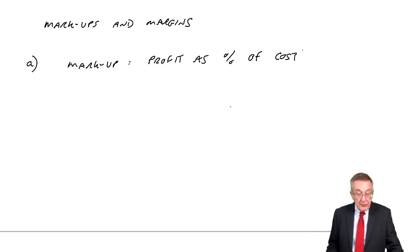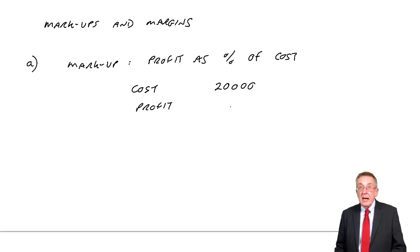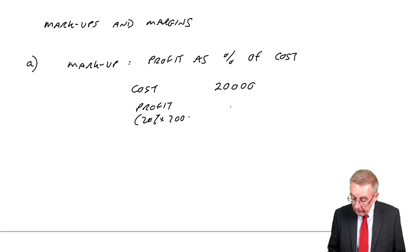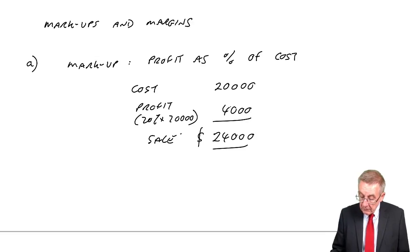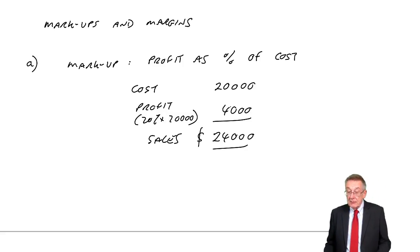And so since the cost of goods sold was 20,000, she'll add on a profit, the markup 20% of cost, 4,000. And therefore, the sales will be 24,000. It's nice and easy. If we know what the cost is of what we're selling, if we know the percentage markup, we simply add on 20% of cost and get the sales.